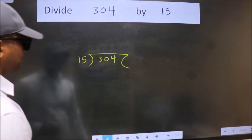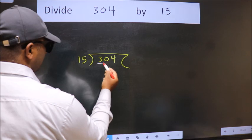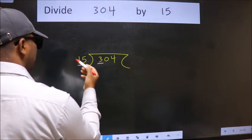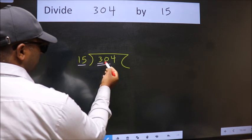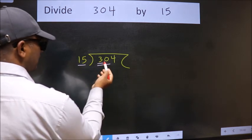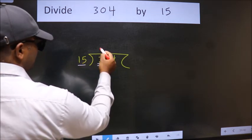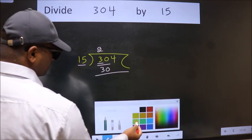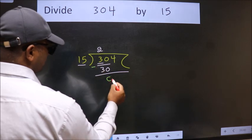Next, here we have 3. Here 15. 3 is smaller than 15, so we should take 2 numbers: 30. When do we get 30 in the 15 table? 15 times 2 is 30. Now we subtract and get 0.